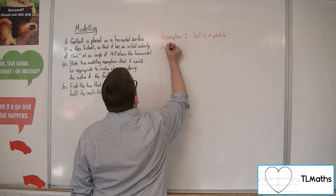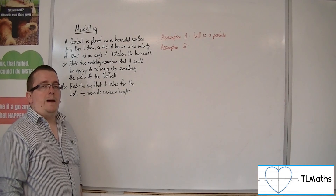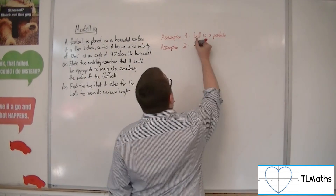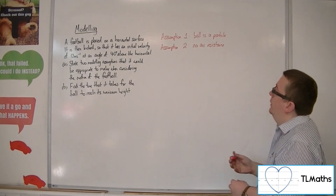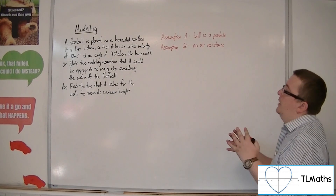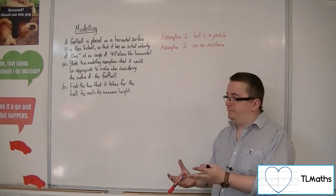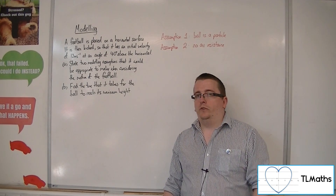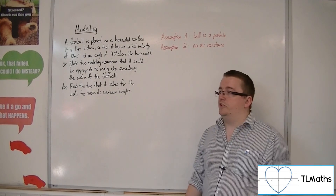Assumption number two: with many of these problems, including this one, we don't want to have to worry about air resistance, so we're going to assume there is no air resistance. You might think that would cause problems if we're actually looking at the motion of this football, because if you think about the size of a football, its shape, and its mass, you would assume that air resistance would play an effect in certain situations. So in order to simplify the maths enough, we assume there is no air resistance to consider.